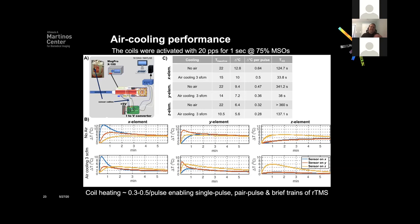The second thing we checked was heating. Smaller coils tend to be more tightly wound with smaller diameter wire, so we used the air cooling approach — injecting air into the coil and giving a brief train of pulses, then observing the temperature rise. With air cooling, coil heating is approximately 0.3 to 0.5 degrees per pulse. More importantly, with air cooling the temperature returns quite nicely after a minute — not exactly to baseline, but enough to start another rTMS round. So with this simple cooling design we can run single pulses, spaced pulses, and brief rTMS trains. Liquid cooling would be more efficient, but for our first approach and the goal of using this inside the MR, we went with basic air cooling.